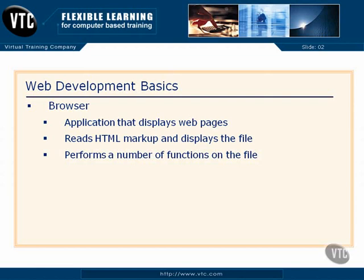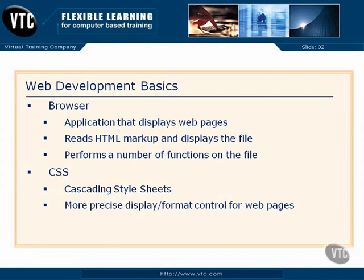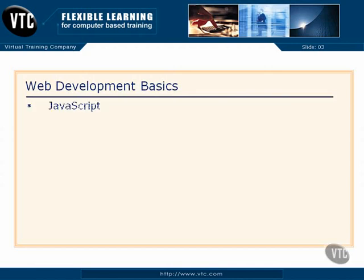CSS, or cascading style sheets, is something we can use to give us more precise display and format control on the data we show in the browser. Regular HTML markup only told us relative size and positioning — it didn't give us a lot of specifics. Cascading style sheets provides all that in a much more manageable and scalable fashion than standard HTML. It lets us store all our display settings in one external file that every page points to, so when we want to make a change, we just change that one file.